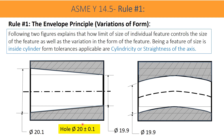In the first figure, the actual hole is produced as tapered. On one side it is at its maximum size limit of 20.1, and on the other side it is at its minimum size limit of 19.9. The variation in size is within the limits of the tolerance specification. The form of the cylinder is also seen as changed because of the size variation — this is a cylindricity error.